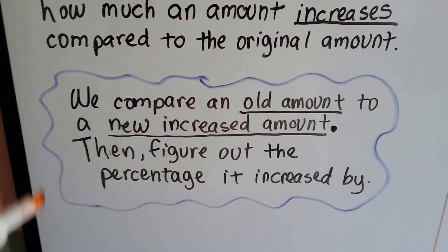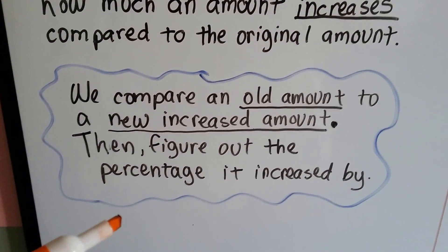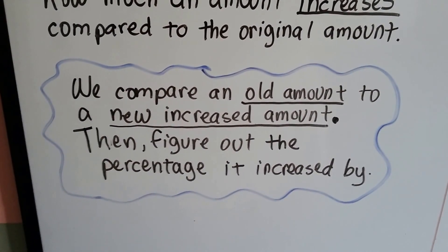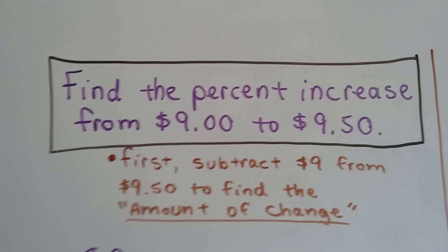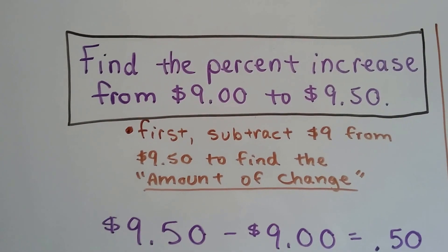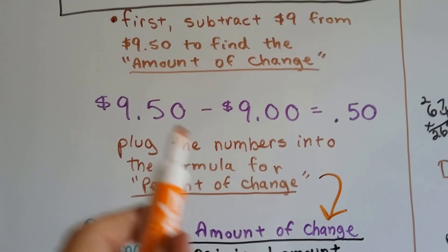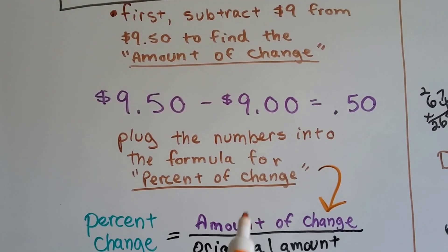We compare an old amount, like you're making $9 an hour, to a new increased amount, like now you're making $9.50 an hour. And then we figure out the percentage that it increased by. To find the percent increase from $9 to $9.50, the first thing we do is subtract $9 from the $9.50 to find that amount of change, because that's going to be our numerator. $9.50 take away $9 is $0.50.